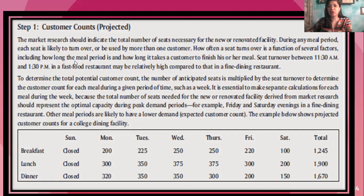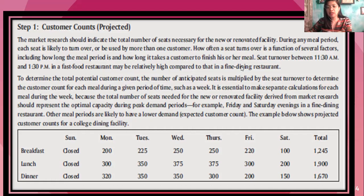How often a seat turnover happens depends on several factors such as the meal period — how long is the meal period and how long will the customer take to finish the meal. The turnover between 11:30 a.m. to 1:30 p.m. in a fast food restaurant may be relatively high compared to that of fine dining, depending on the types of meals being served.